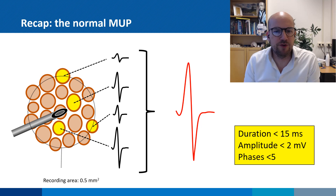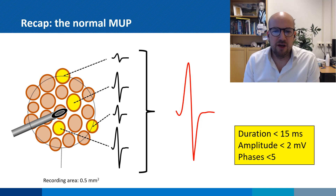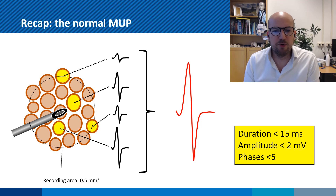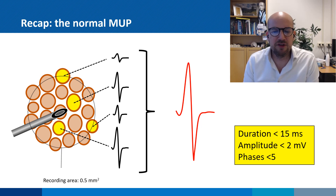As a recap, what we do when we perform needle electromyography is we measure the electrical activity of motor units. This electrical activity is called motor unit potential, which is the summation of the electroactivity of several muscle fibers which are all connected to the same axon. A typical motor unit potential has several characteristics: a shape with a duration no longer than 50 milliseconds, an amplitude no higher than 2 millivolts, and less than 5 phases.